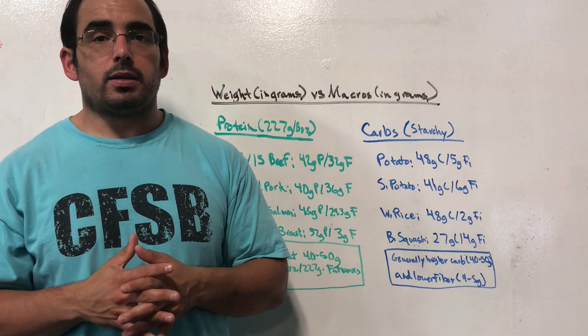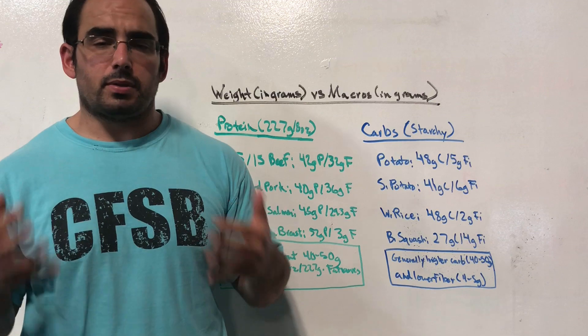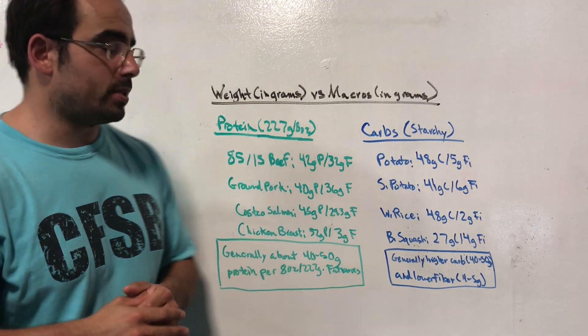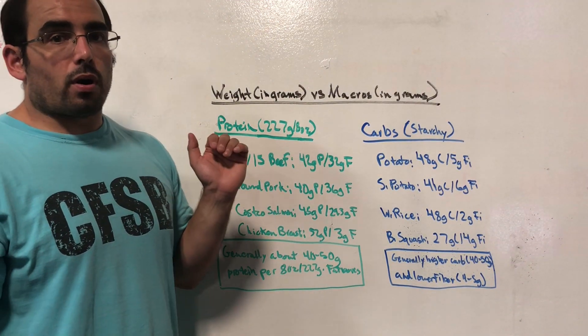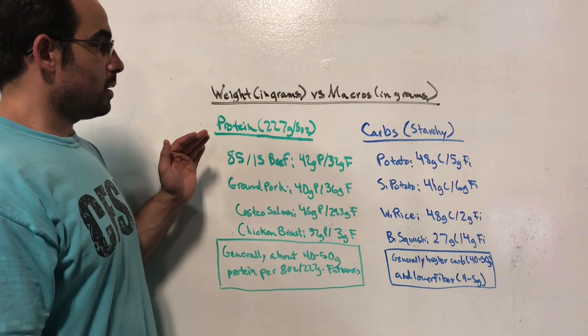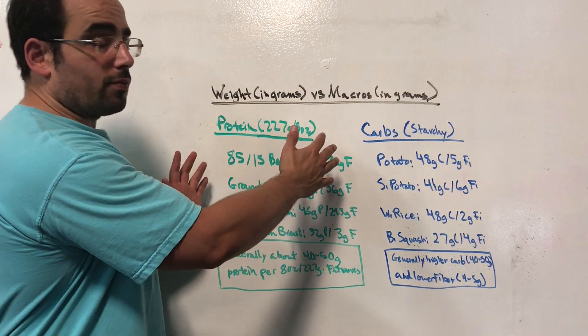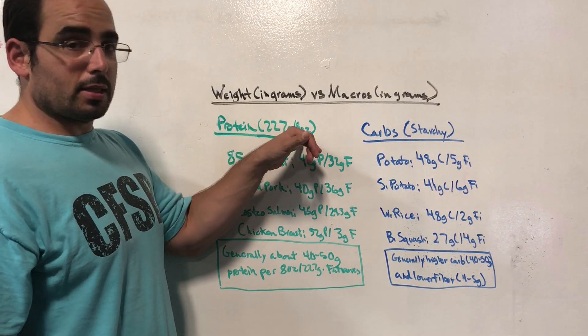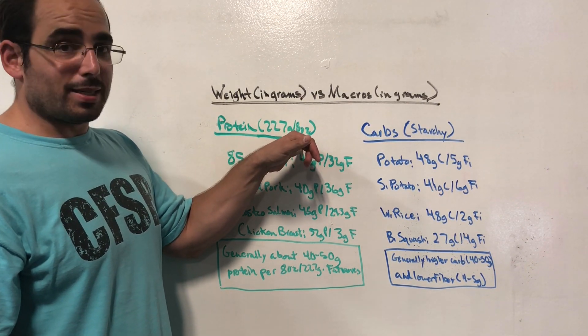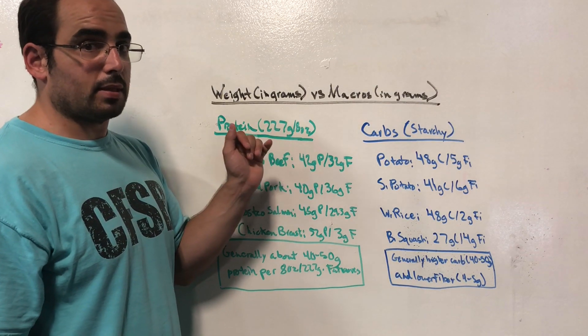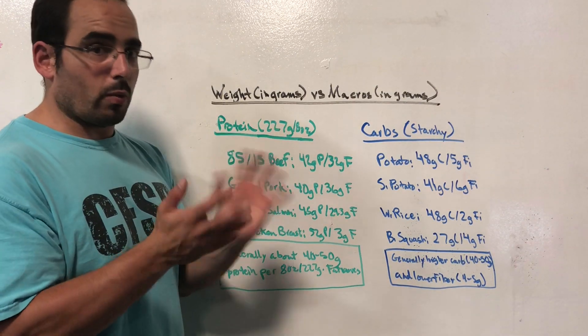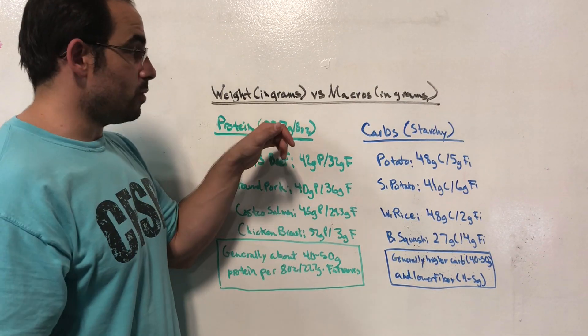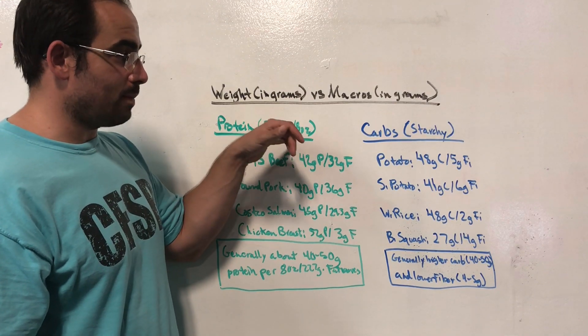I think the easiest way for me to explain this is with some examples. So let's dive right in. Let's talk about protein. For protein, all of the different examples I have listed here are all eight ounces by weight, which is just the exact same thing as 227 grams by weight, just a different way of measuring it. It's just a different unit system, but those two are the exact same thing.